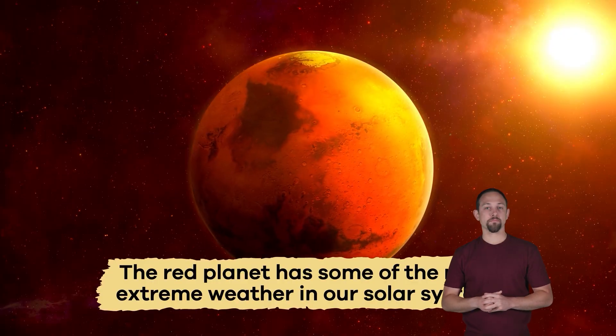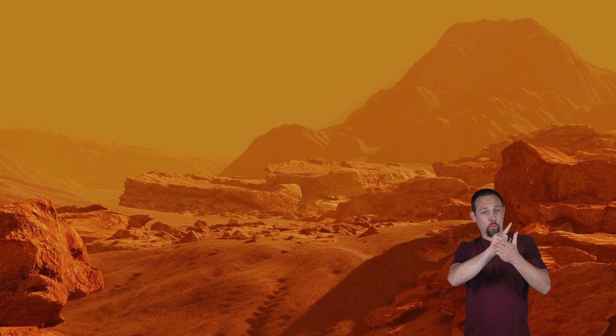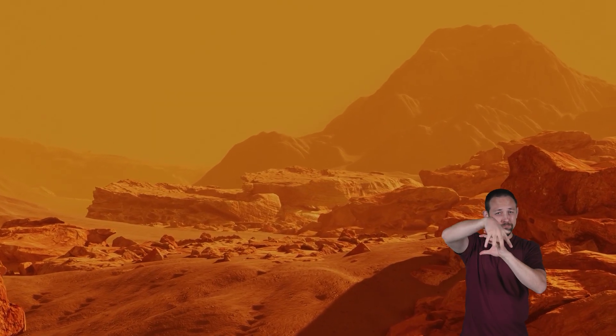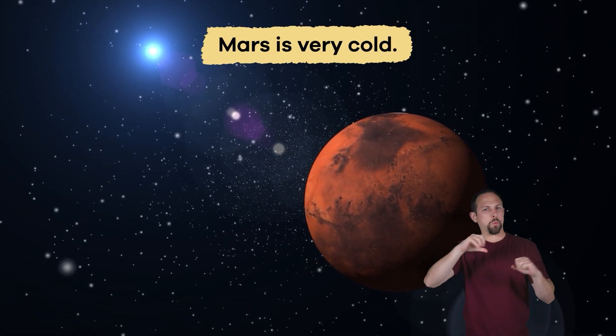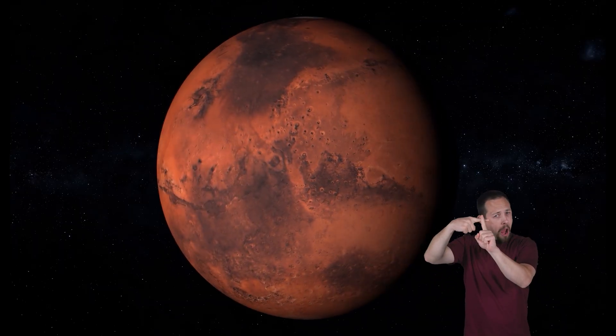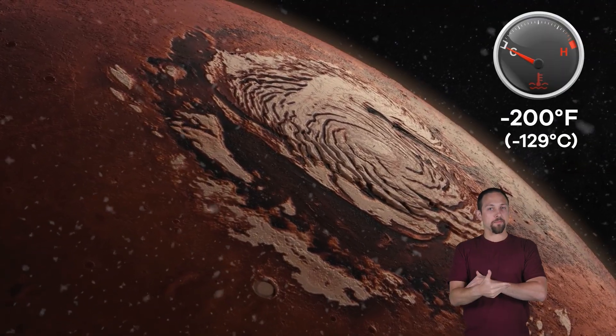The red planet has some of the most extreme weather in our solar system. Strong winds create dust storms that last for weeks and cover the entire planet. Scientists have used special equipment like rovers and orbiters to study the weather and measure the temperature. Mars is very cold. So cold, the temperature plummets down to as cold as negative 200 degrees Fahrenheit during the night.